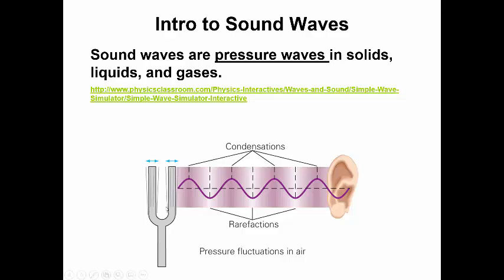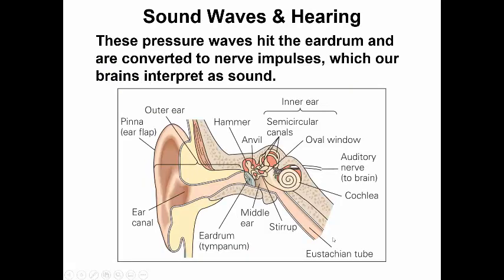If we struck a tuning fork, we would have sound waves that would eventually get to our ear. These are really pressure fluctuations within the air — a gas as opposed to a solid or liquid. These pressure waves hit the eardrum and get converted to nerve impulses, like little electric signals, and our brains interpret this as sound. We can discern different pitches, which are basically different frequencies.